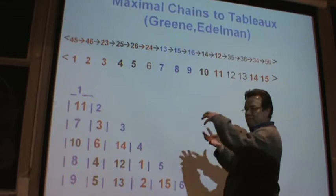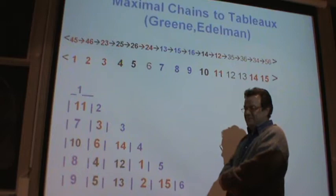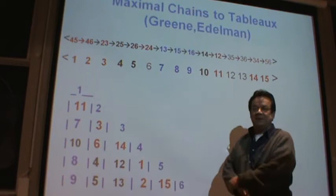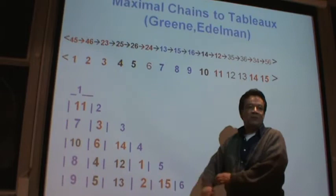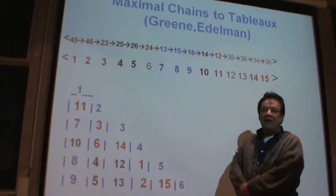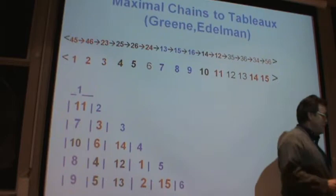Beautiful things happen right now. All these numbers are different — they have to go from one to the total number of entries. These numbers satisfy a balanced property, and that balanced property happens on what are called hooks of this object.